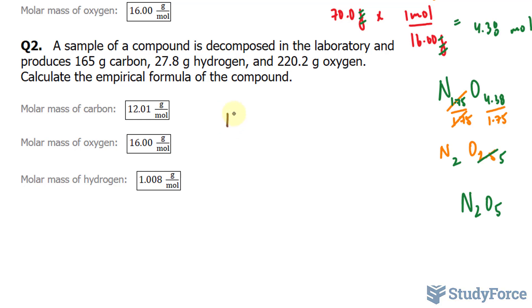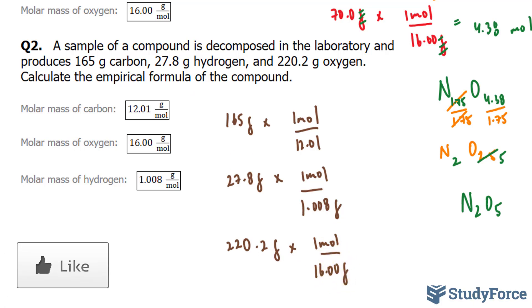Starting with carbon, I have 165 grams. I'll multiply that by its molar mass, 1 mole over 12.01. I'll set up the next calculation. 27.8 times 1 mole over 1.008 grams for hydrogen. And finally, 220.2 grams times 1 mole over 16.00 grams. Grams units all cancel out, leaving us only with moles.